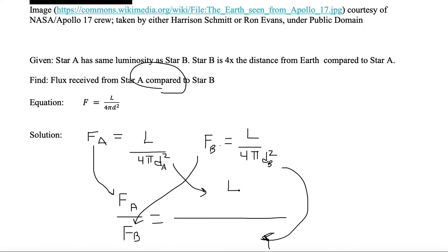Let's add that: luminosity divided by 4π, and now we have a d but it's at a different distance, so I have to put dA here and square it, and then put the luminosity below it and put 4πd² below that.